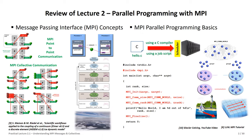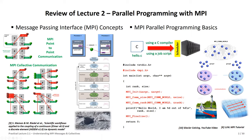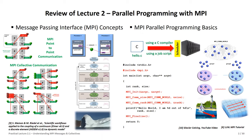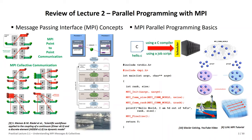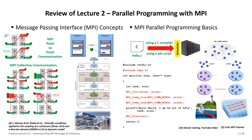Instead of broadcast, where the same data goes to all, the scatter operation distributes different elements of an array to different processors. This is useful when you think about single program, multiple data — SPMD. Even if the same program runs on all processors, with scatter each processor operates on different data, which gives a good example of SPMD.